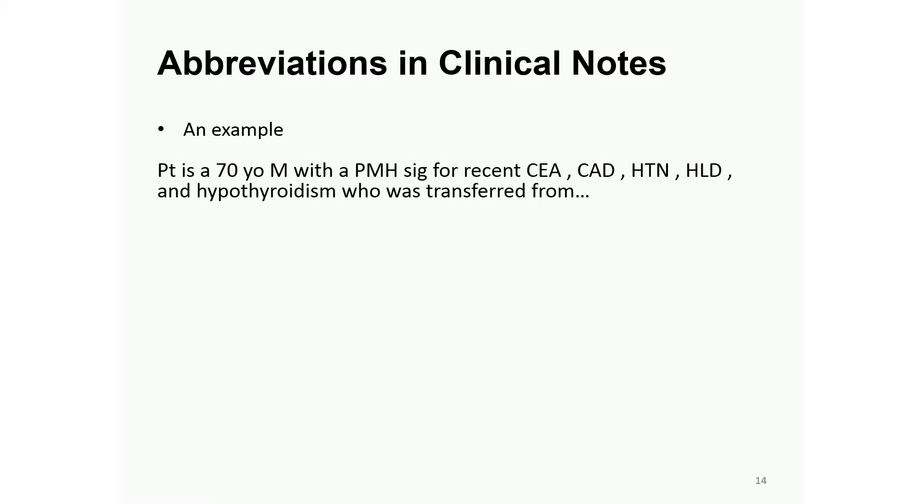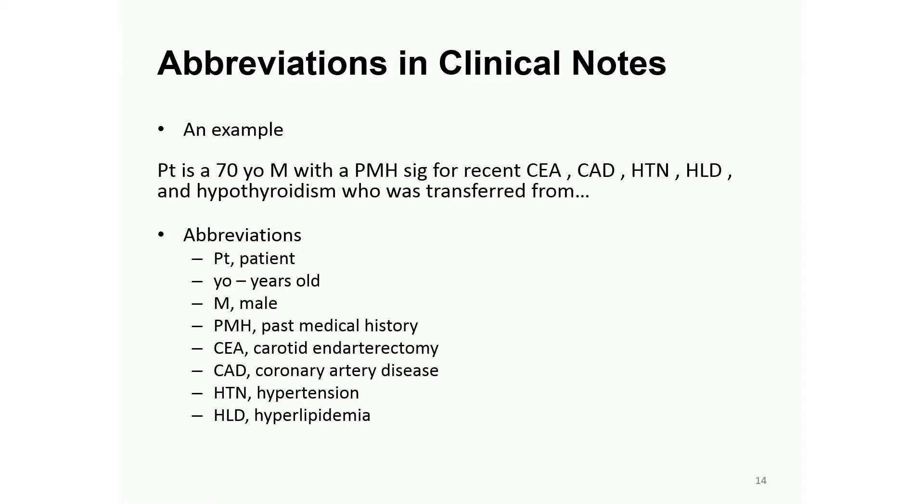I'll give you an example of clinical text talking about a patient: seventy-year-old man with PMH, blah blah blah. Obviously, this is very different from maybe the news articles you're reading. The main problem is abbreviations. PT is patient, year old. That's how physicians write. They want to save time. But when we do NLP, we have a problem to really recognize what exactly the meaning is.